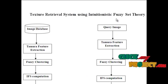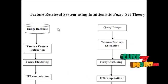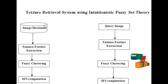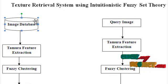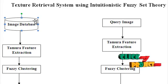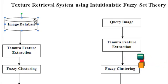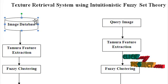Now let's see the explanation of this data flow diagram. The first block is the image database — a collection of MRI brain scan images. It is of three kinds: normal, benign, and malignant.